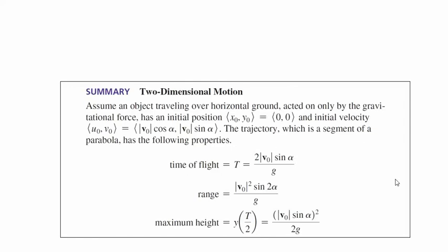These are the values we just verified from our triangle. Now we want to derive three things: the time of flight, the range, and the maximum height. I'll get you started and then you finish it up. Do you remember how we found time of flight in the previous baseball example?